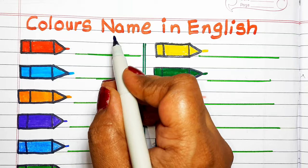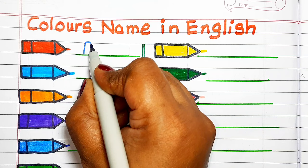Here we will write Colors Name in English with its spelling. Red, R, E, D.